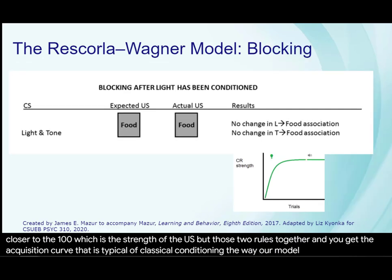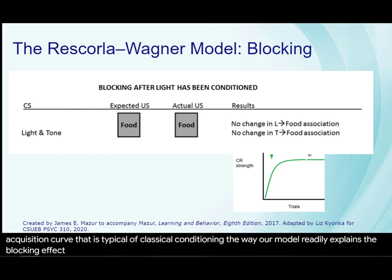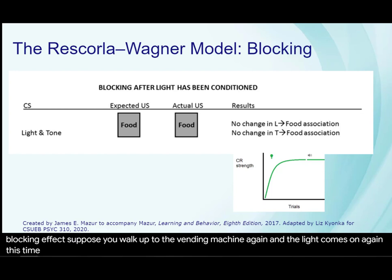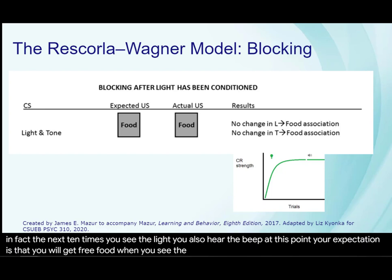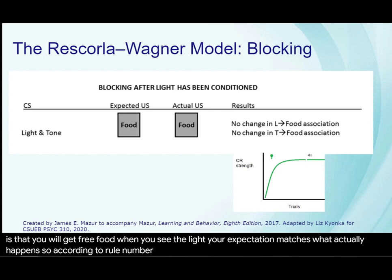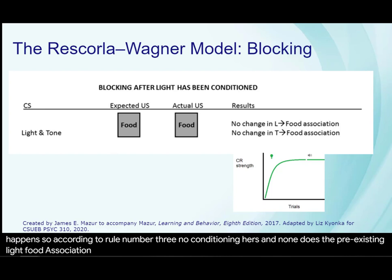The Rescorla-Wagner model readily explains the blocking effect. Suppose you walk up to the vending machine again and the light comes on, this time accompanied by a gentle beeping as well as followed by the presentation of a treat. In fact, the next 10 times you see the light, you also hear the beep. At this point, your expectation is that you'll get free food when you see the light — your expectation matches what actually happens. So according to rule number three, no conditioning occurs, and none does. The preexisting light-food association blocks the formation of a beep-food association.